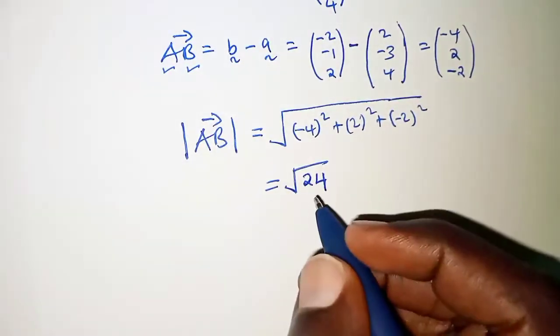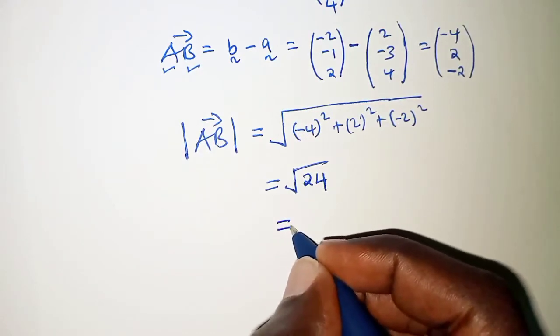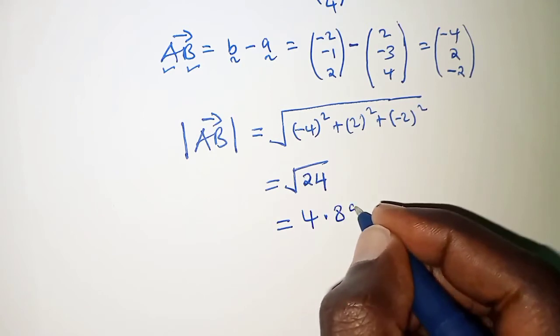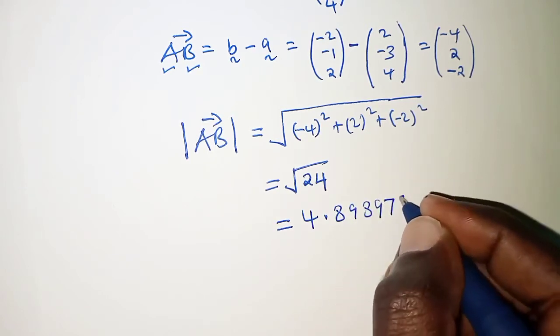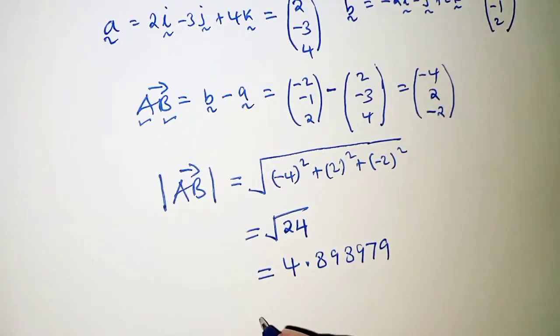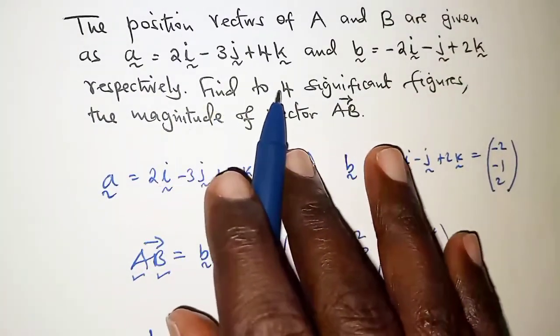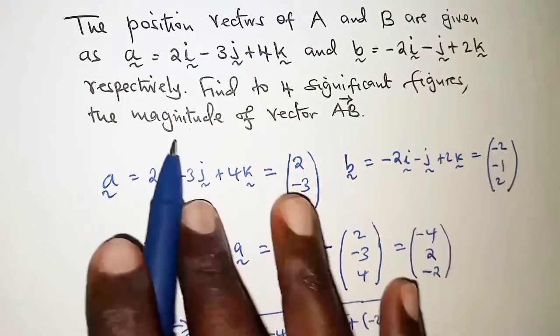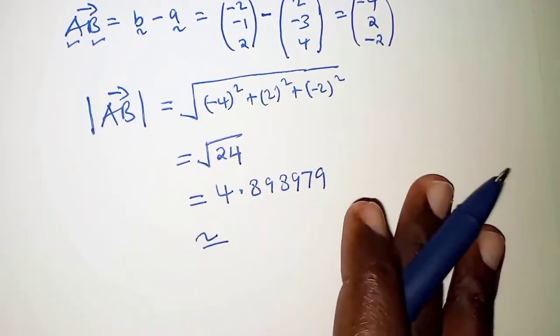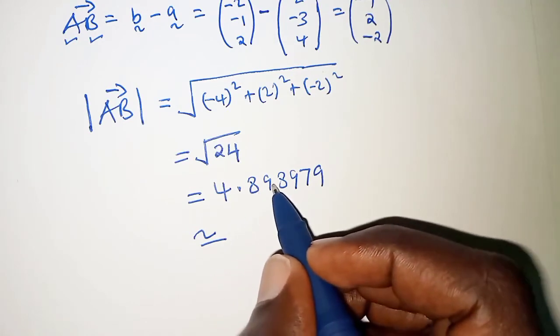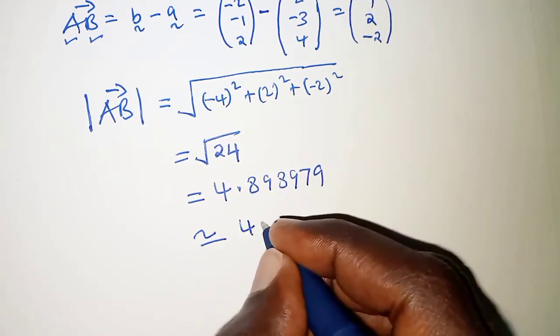Which is 4.898979. Remember, we are told to find the magnitude to 4 significant figures. Counting 1, 2, 3, 4, we have 4.898.